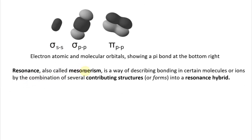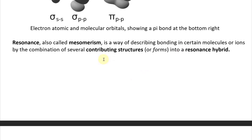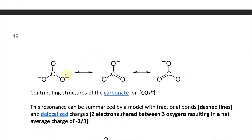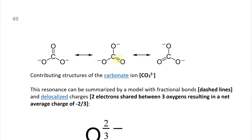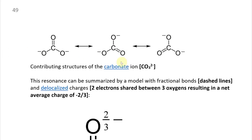Resonance, also called mesomerism, is a way of describing bonding in certain molecules or ions by the combination of several contributing structures or forms into a resonance hybrid. Here's an illustration: the carbonate ion CO3 2- can have a double bond on this oxygen and not on the others, then it can keep switching — the double bond could be on a different oxygen.